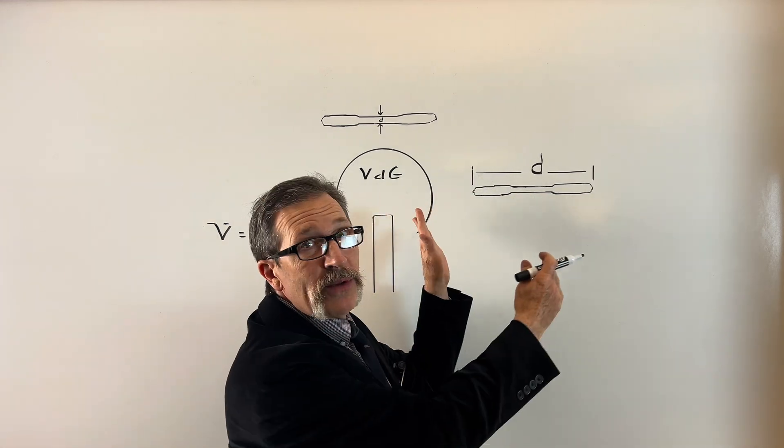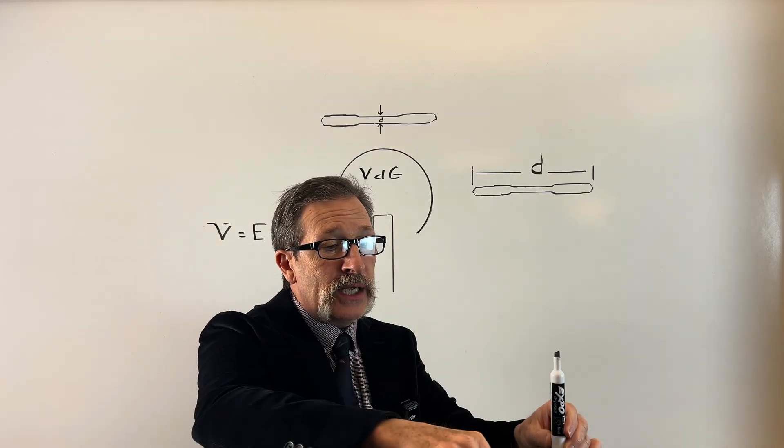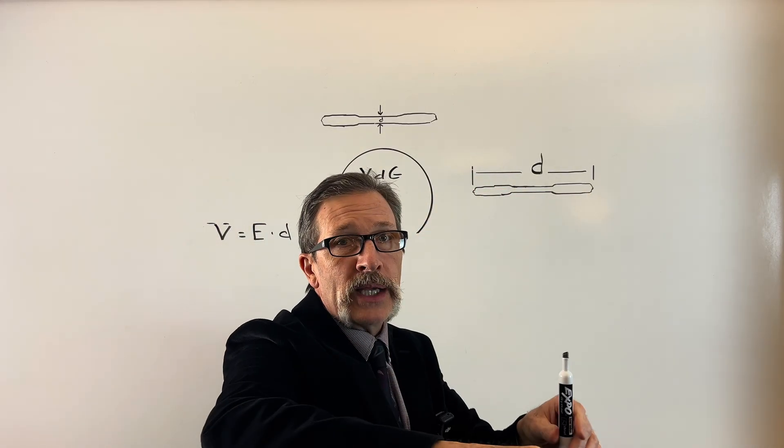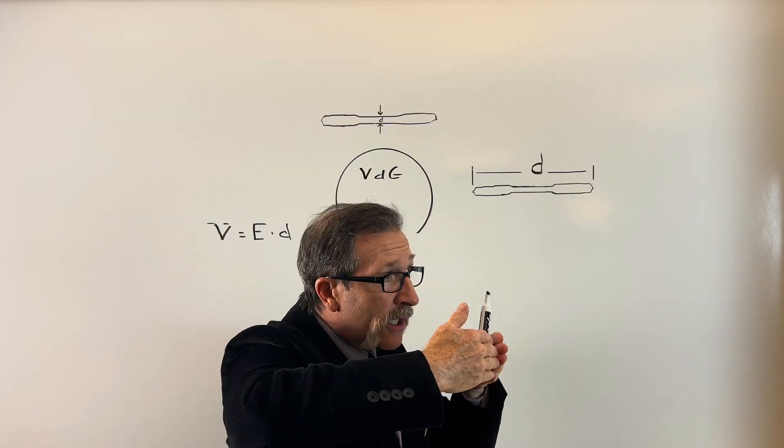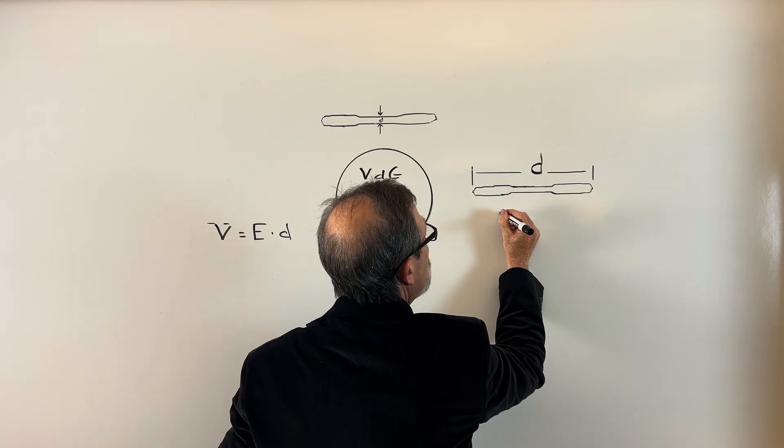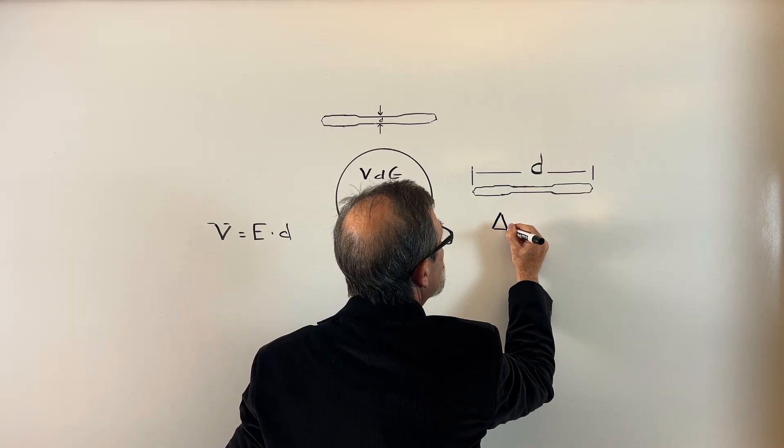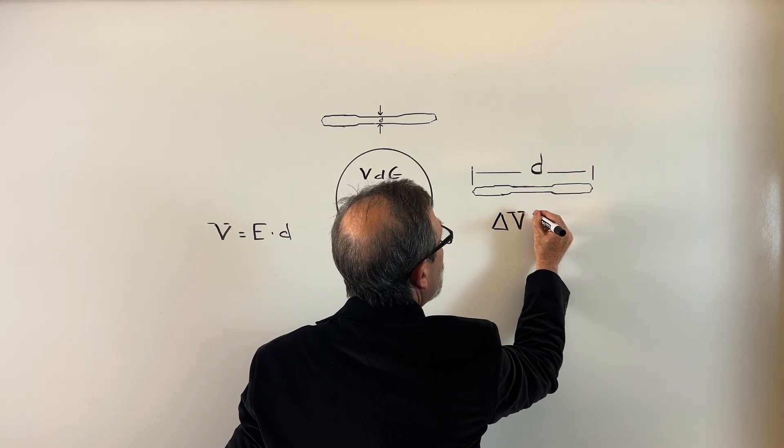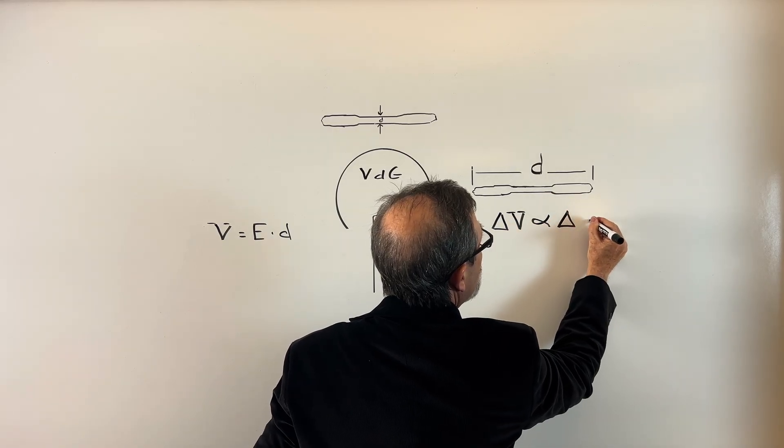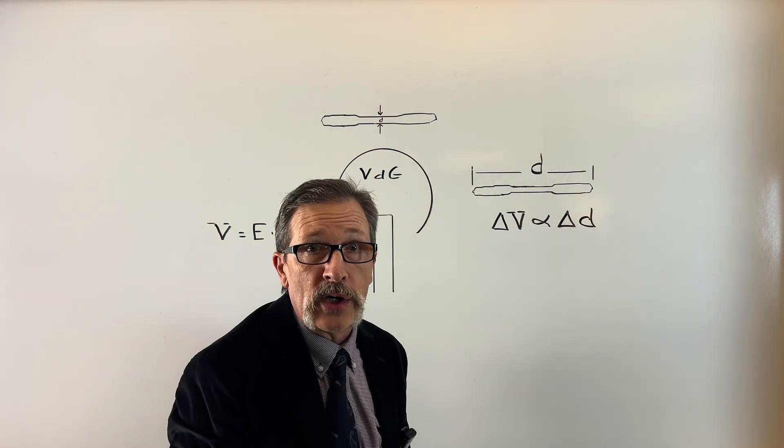The way that we get a voltage difference is to change our distance. So over here, notice that we've got a massive change in distance between the one side in the tube and the other. And of course, the electric field is going to be a gradient as it goes out. But we can say our change in voltage here is large because it's proportional to our change in our distance, which is also large.